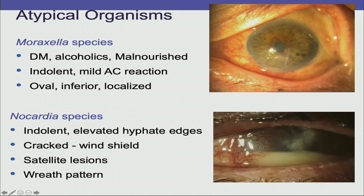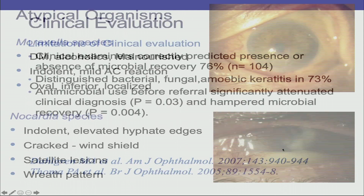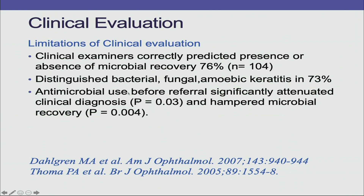Nocardia presents as a flower-like or wreath pattern with satellite lesions — indolent ulcers with elevated high-fat edges and a cracked windshield appearance. The limitation of clinical evaluation is that you can pick it up only about 76% of the time, and you may still require microbiology in one-third of cases.